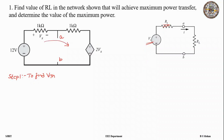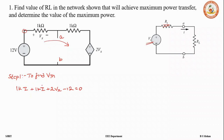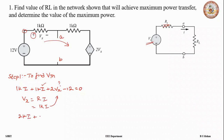We'll apply mesh analysis to find VTH. Assuming current in the clockwise direction and starting from the left top corner, the KVL equation is: 1K·i + 1K·i + 2Vx − 12 = 0. We replace Vx using Ohm's law: Vx = 1K·i, since the current hits the positive terminal. Substituting gives: 2K·i + 2·(1K·i) = 12, which simplifies to 4K·i = 12, so i = 12 / 4K = 3 mA.